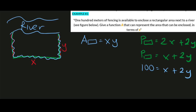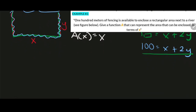Our task is to give a function A of X — in terms of X. We already have the X value; we need to find Y. So we will solve for Y using the equation X plus 2Y equals 100. Let's isolate 2Y by applying the subtraction property of equality: subtract X from both sides, giving us 2Y equals 100 minus X.